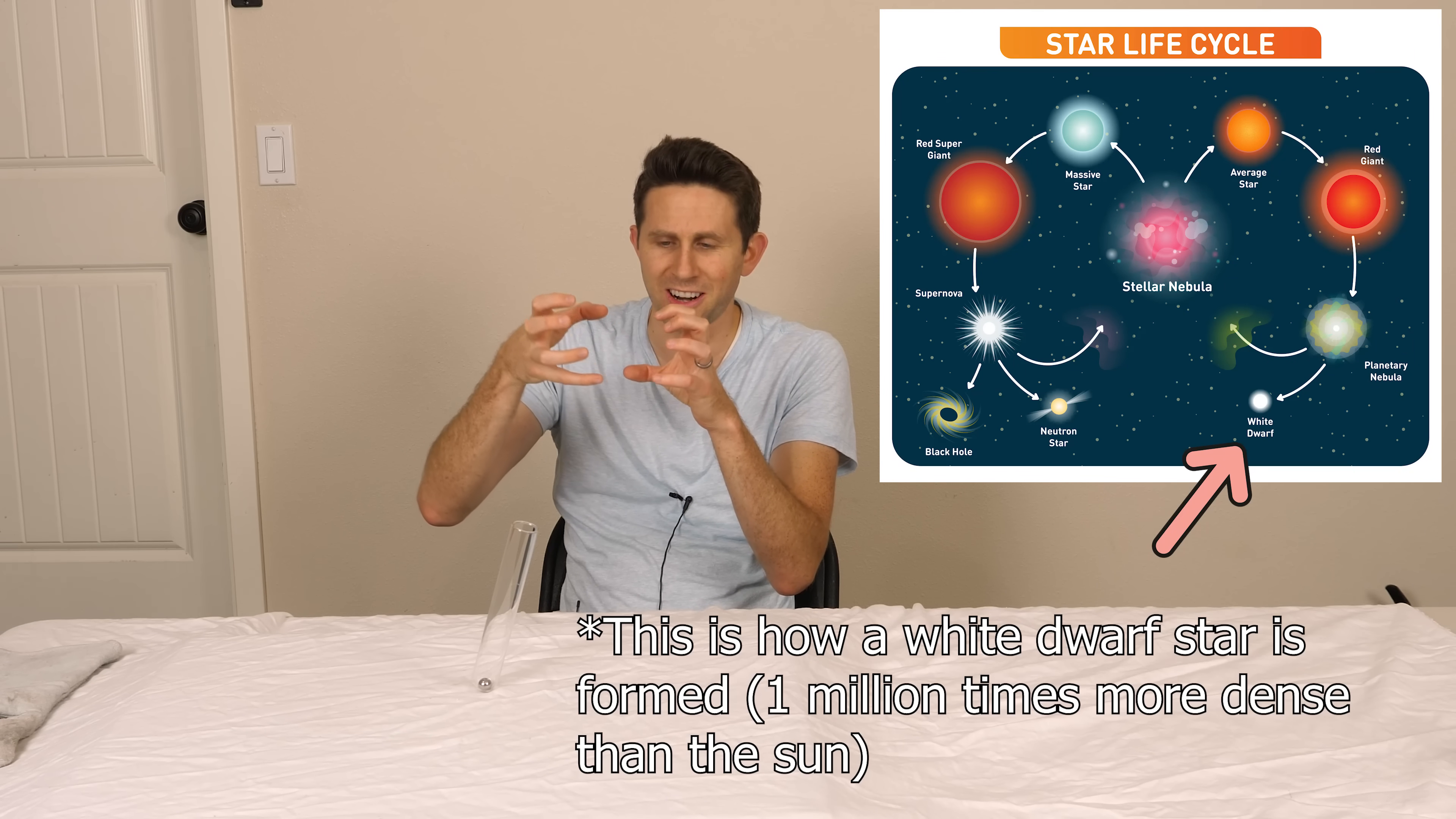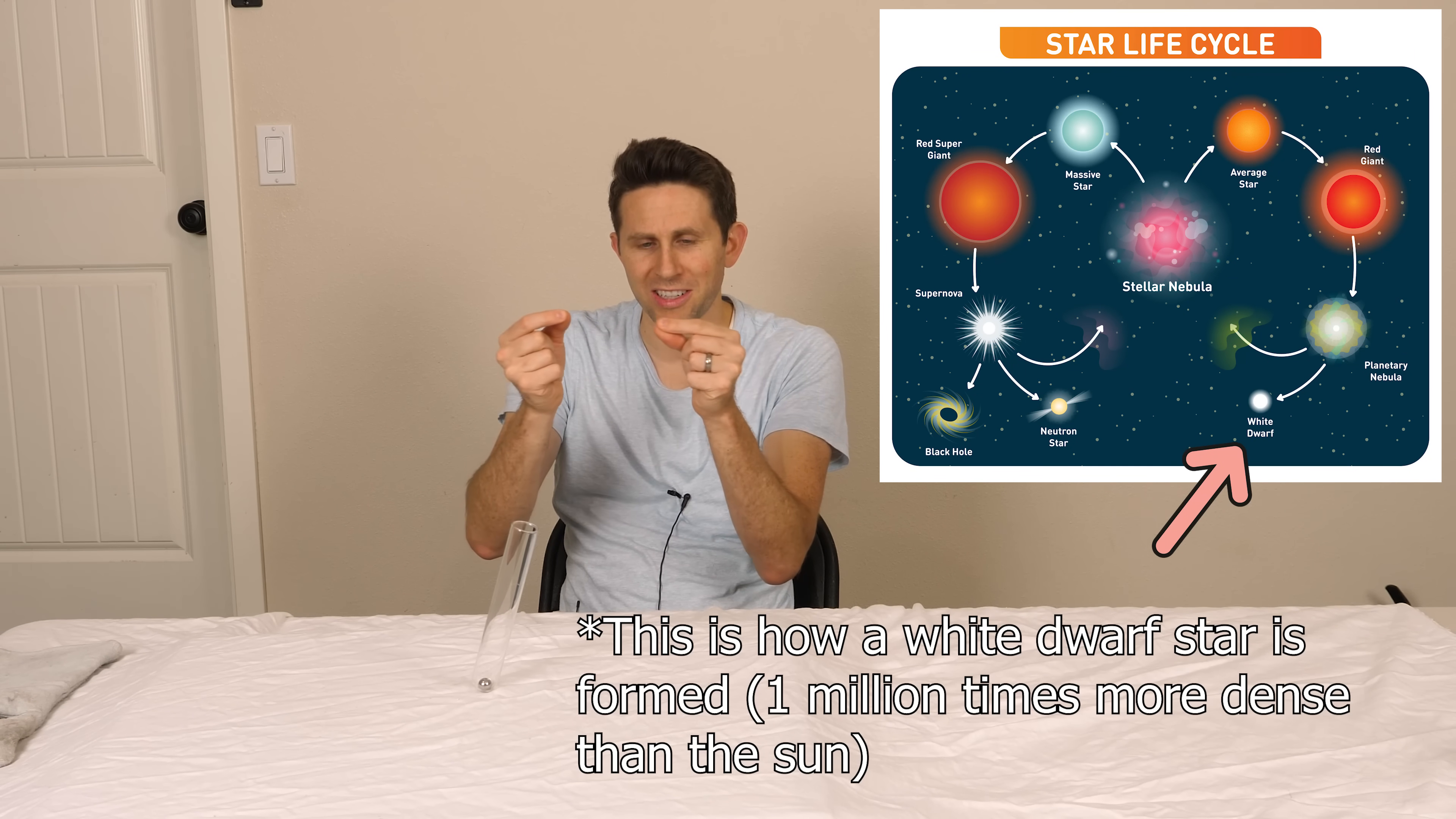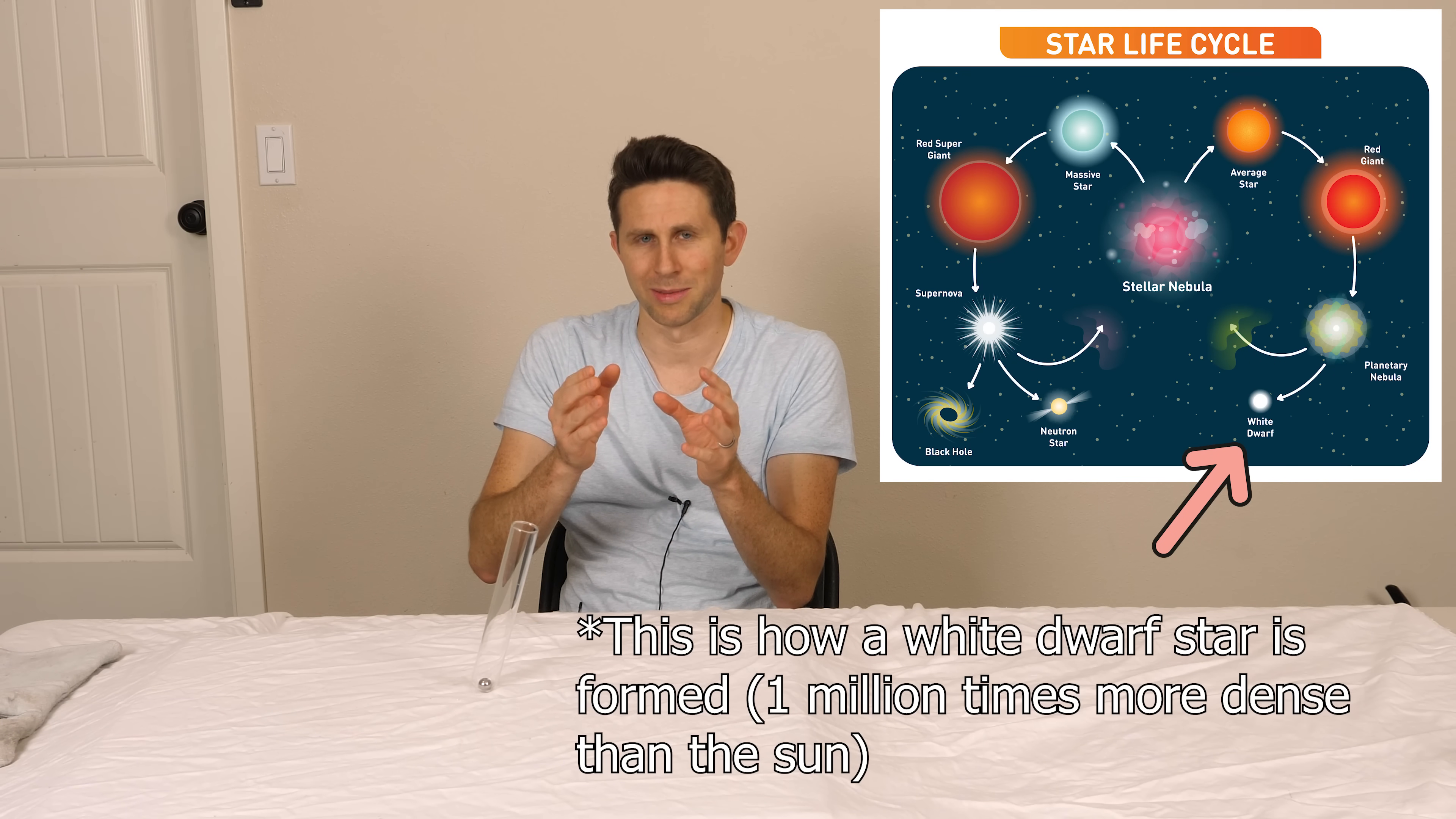But what can happen sometimes is if there's enough mass, then the mass will keep collapsing in on itself in the star. It'll collapse more and more until actual electrons are becoming so close together that they become as close together as they can possibly get. And the only thing that's stopping them from overlapping each other is the Pauli exclusion principle.